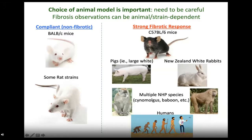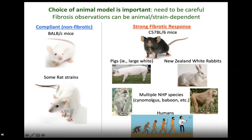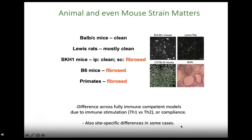Over years of working with pigs — Yorkshire, Large White, and so on — we realized that they have an intact fibrotic response. So do New Zealand White rabbits and various monkey species. In this particular case I'll show data later on cynomolgus monkeys, and then obviously the relevance to humans as well.